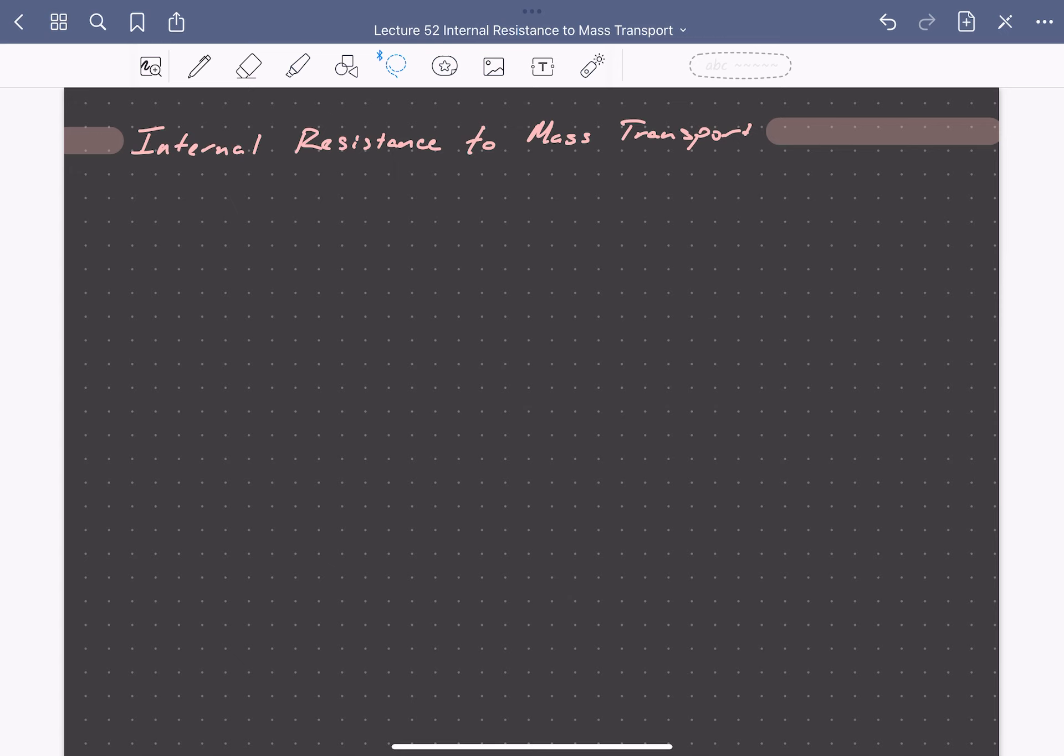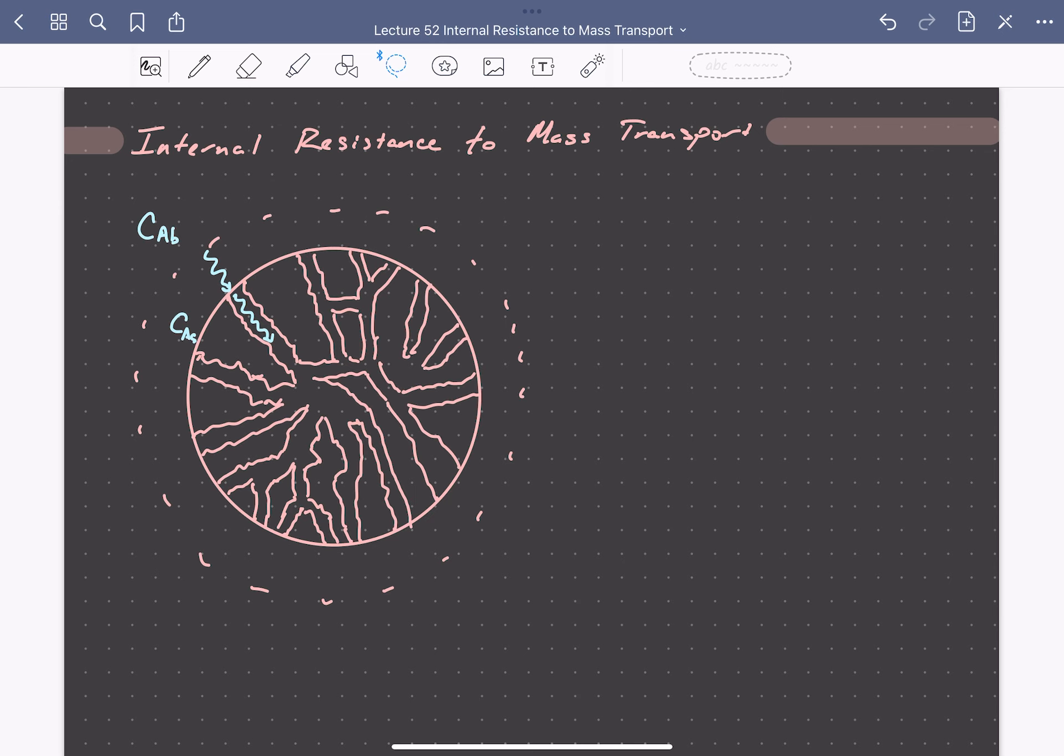Let's consider internal resistance to mass transport. As we discussed previously, many solid catalysts contain pores. In these systems, as depicted here, reactants must diffuse through the pores to reach active sites and undergo reaction, and products must diffuse out once formed. When these transport processes are not sufficiently rapid, they can impact the overall rate of the catalytic process.